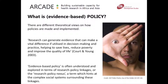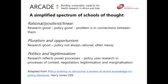There are many schools of thought around this. The rationalist, positivist, linear school of thought basically means research is good, policy should be good, but the problem is the connection between the two. Pluralism and opportunism explores the idea that research may be good but policy isn't always a rational process — it can be very messy. The politics and legitimization school of thought looks at how research reflects on power processes, so policy uses research in processes of contest, negotiation, legitimization, and marginalization. Please see the ODI publication 'Policy Making as a Discourse' to further expand your understanding on this area.